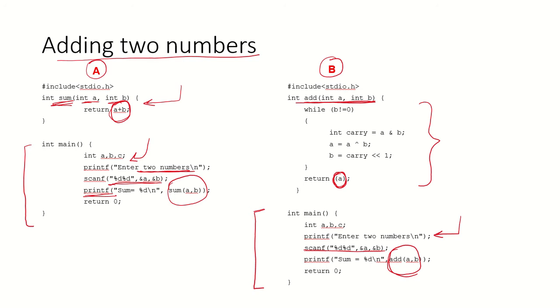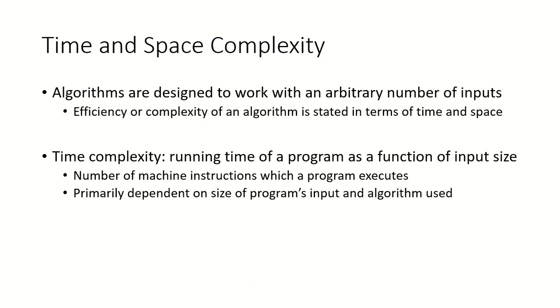But which algorithm is better? How do we know that algorithm A is better than algorithm B or vice versa? What are the parameters, the factors on which we can base this judgment? We know that algorithms are designed to work with an arbitrary number of inputs. The efficiency or complexity of an algorithm can be stated in terms of time and space.